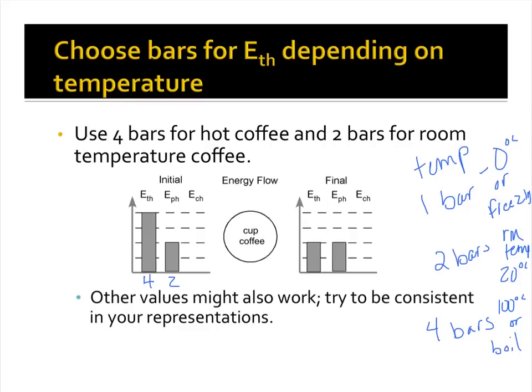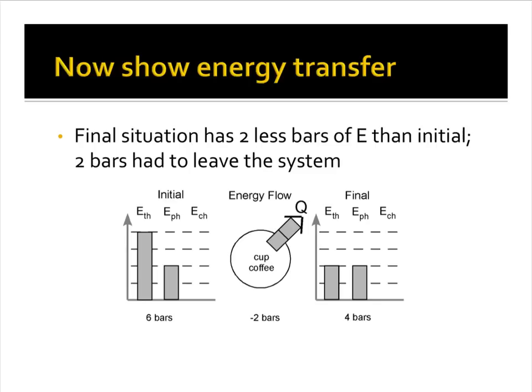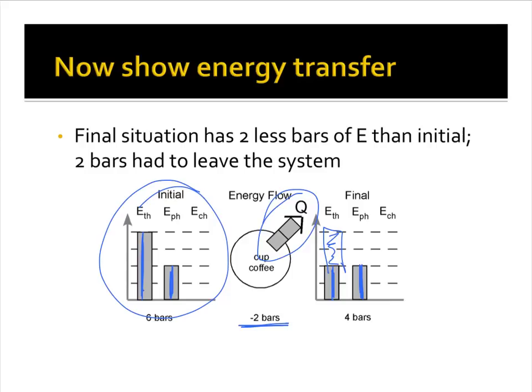So we can see our coffee is really hot — steaming — so we have four bars for thermal and two bars for phase in the before. It's brought down to room temperature, so in the after we have two bars for thermal and two bars for phase. Those two bars of thermal energy that were lost had to go somewhere, so we draw them going out of the system.